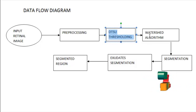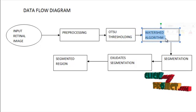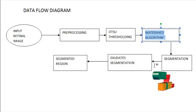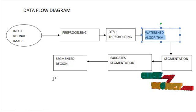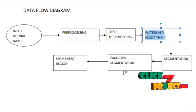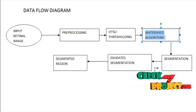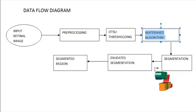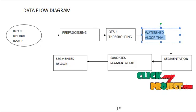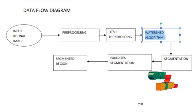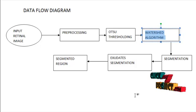The next one is watershed algorithm. Watershed algorithm is used to segment images. Gray-level image may be seen as a topographic relief where the gray-level of a pixel is interpreted as its altitude in the relief. A drop of water falling on a topographic relief flows along a path to finally reach a local minimum. The watershed of a relief corresponds to the limits of the adjacent catchment basins of the drops of water.